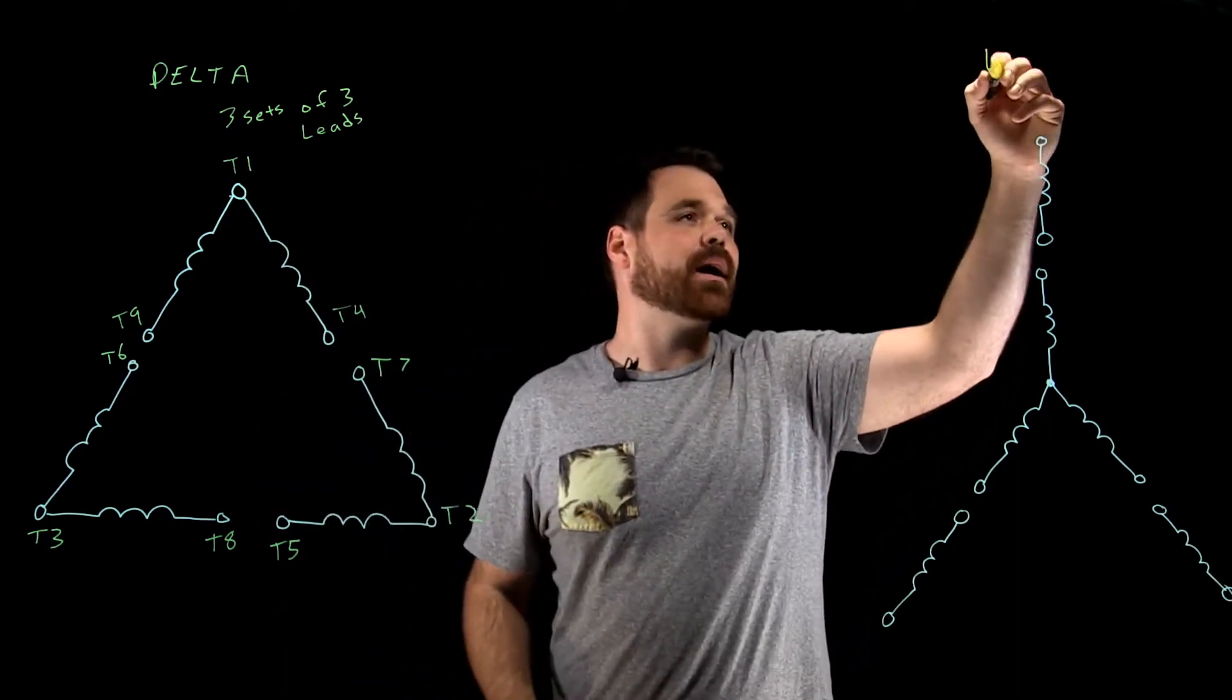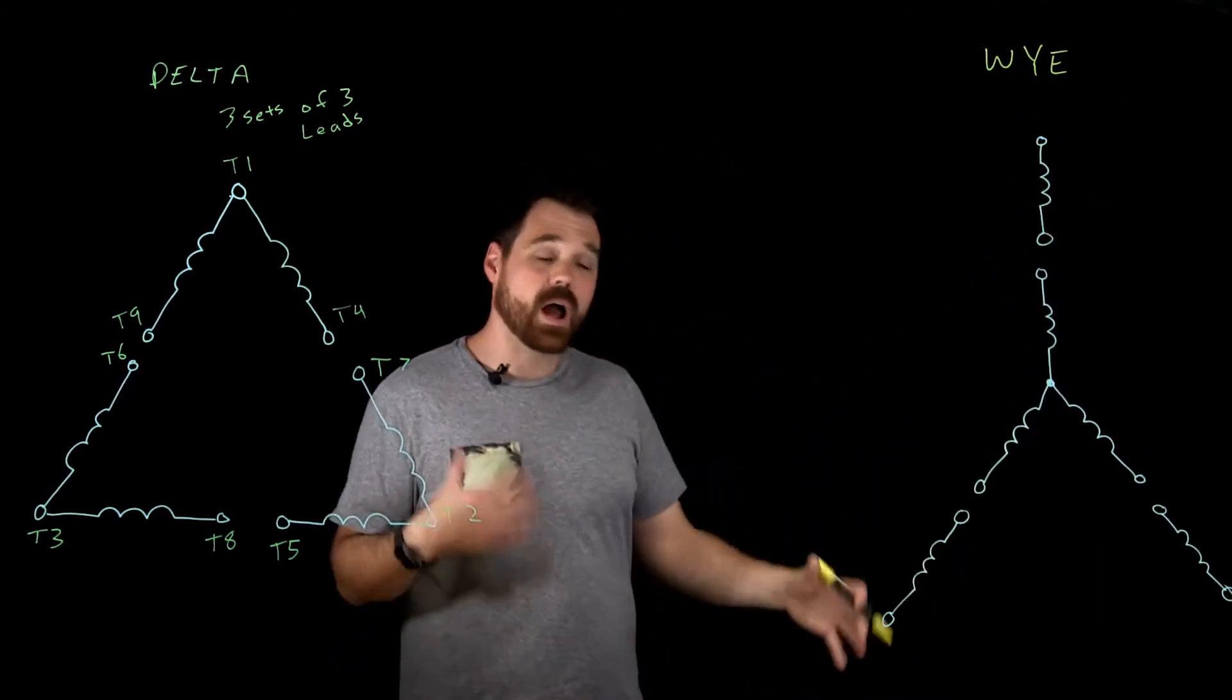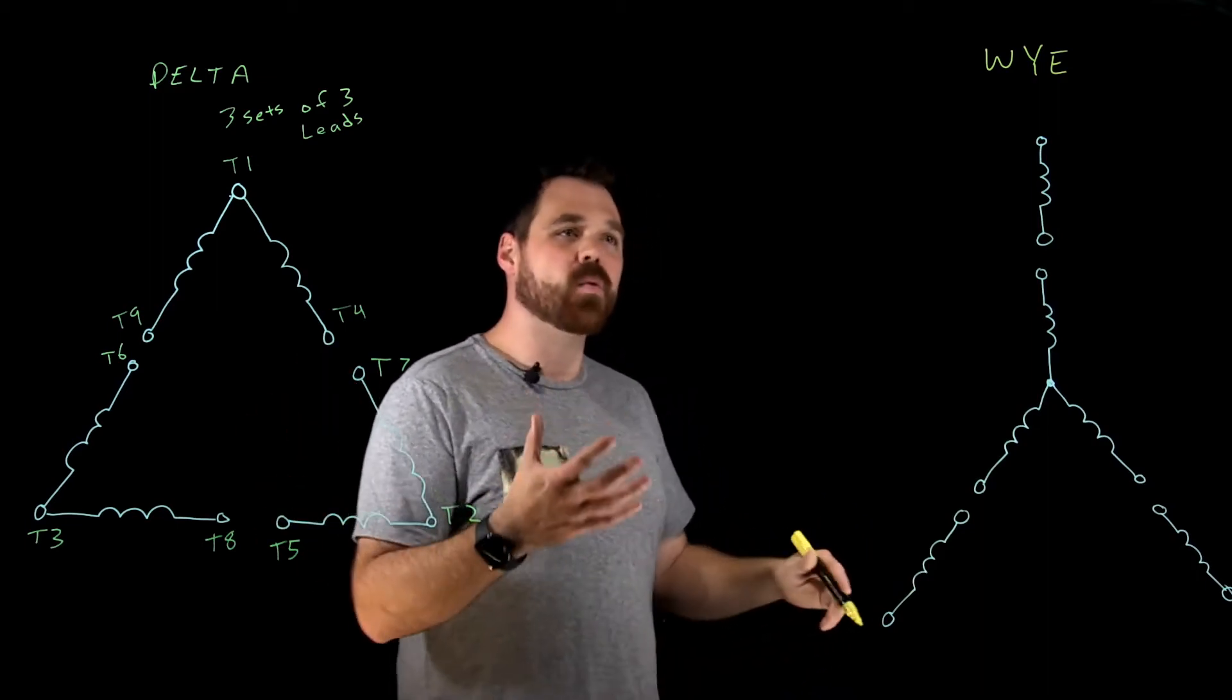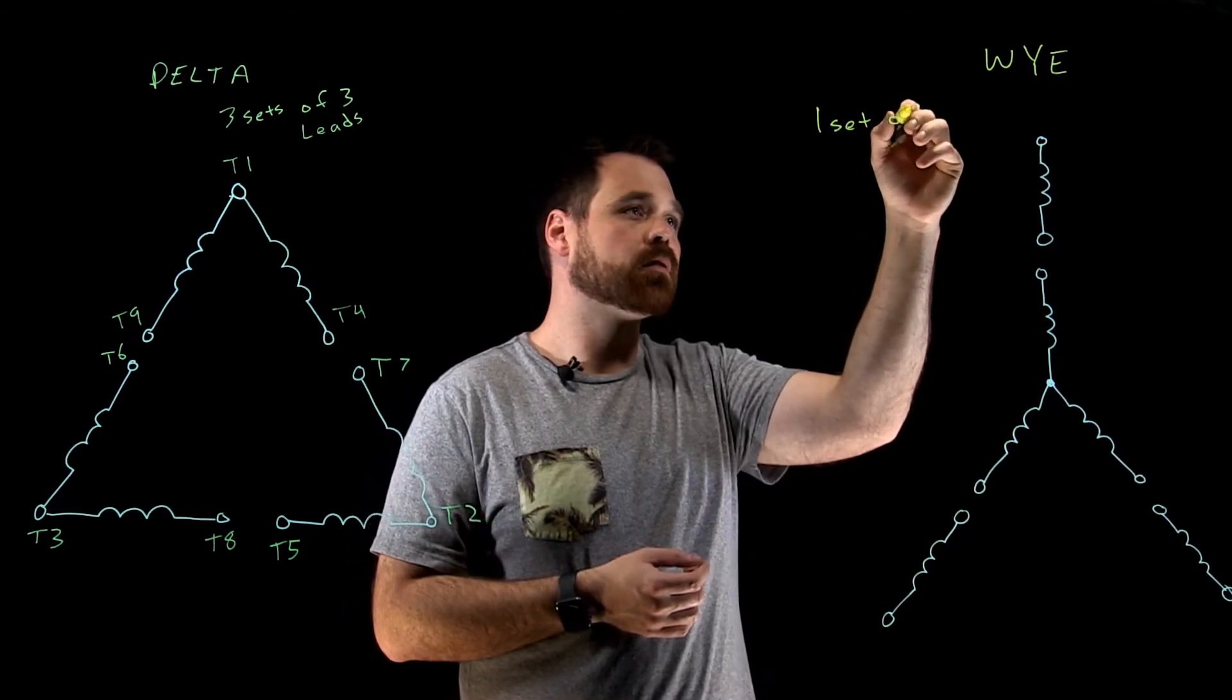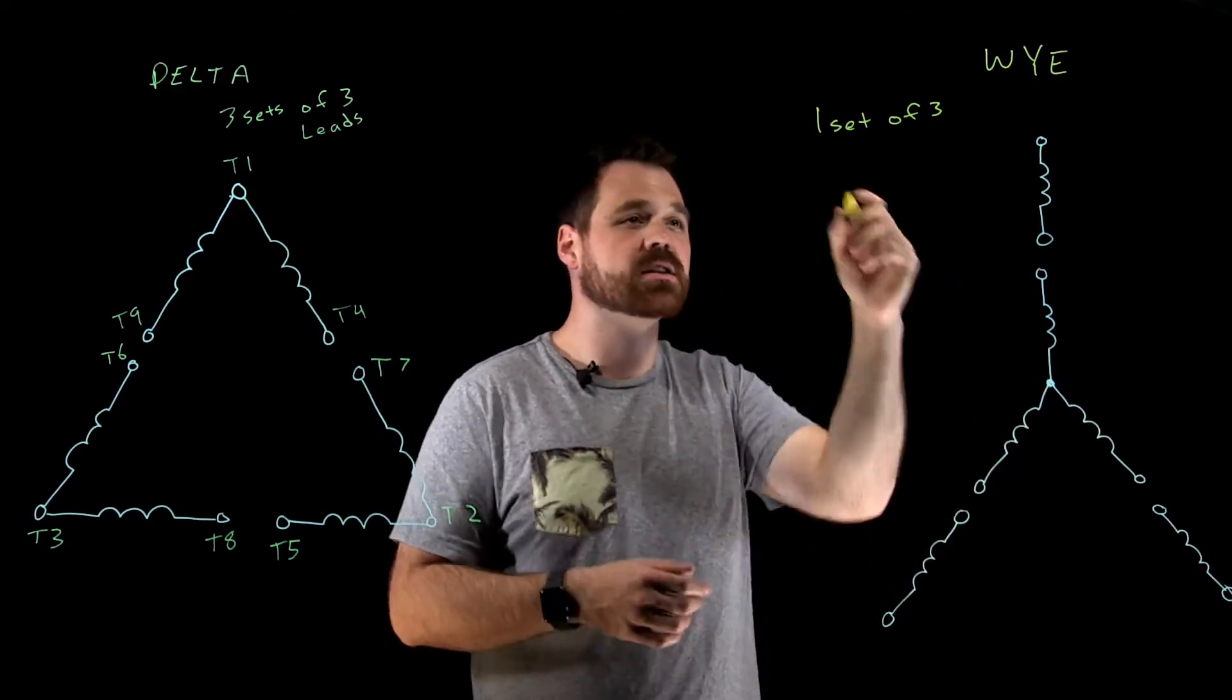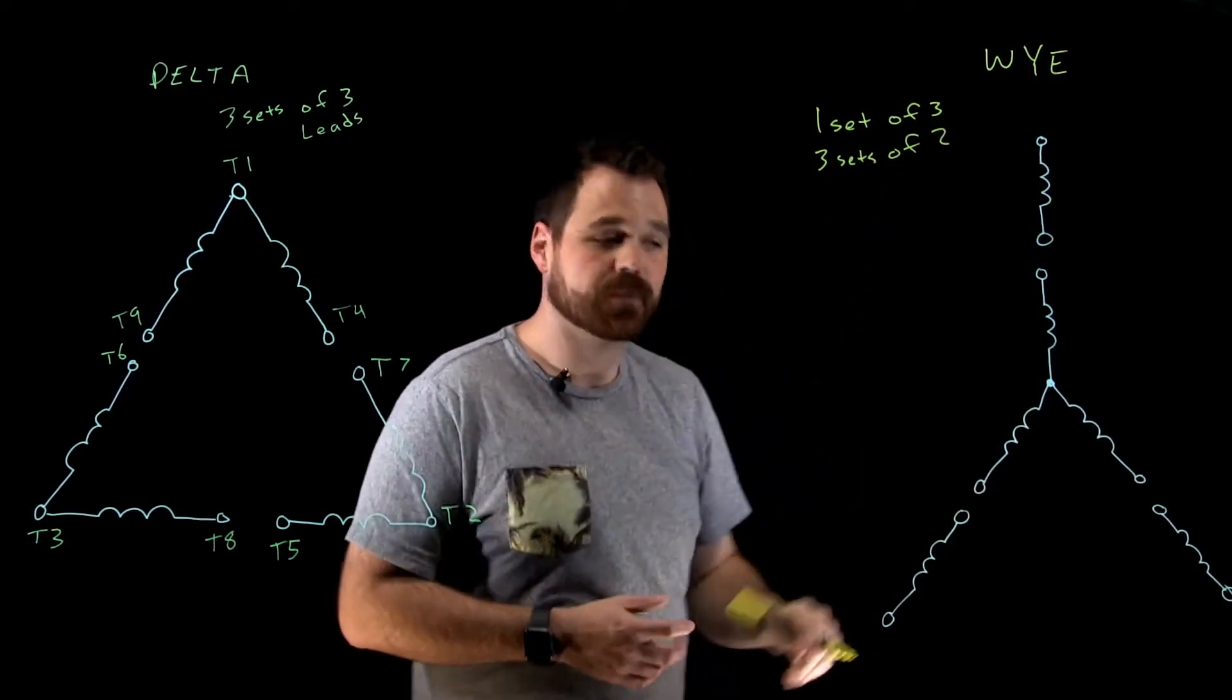Now over here, I have my nine lead Y motor. How I would identify my Y motor versus my delta motor is my Y motor, I would have one set of three, which would be my Y point here in the middle, I would have continuity between those three points and three sets of two.